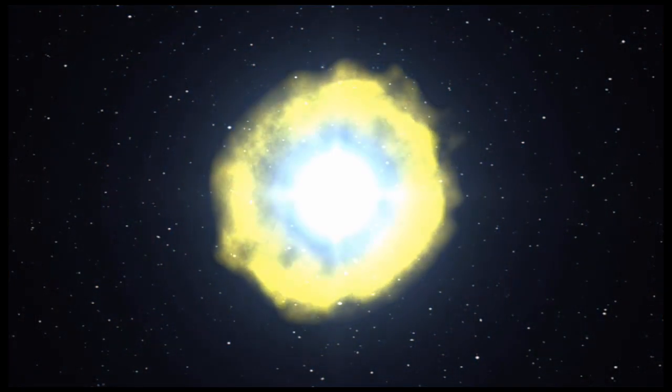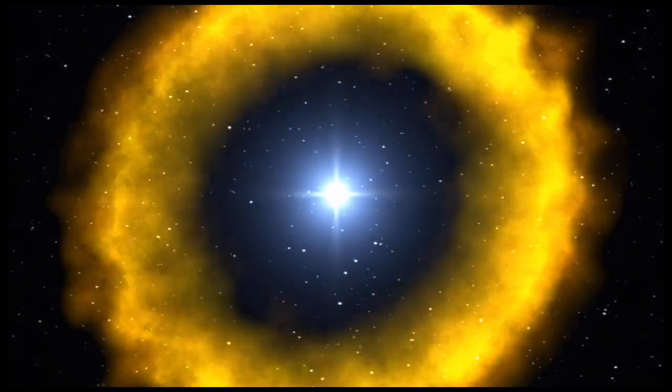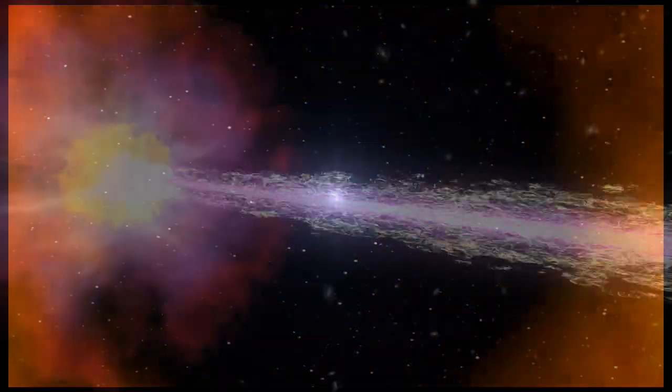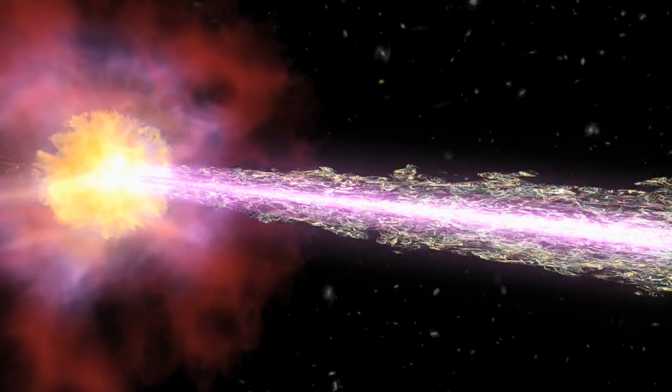We observed a gamma ray burst. A gamma ray burst is a huge explosion. That gamma ray burst produced a large number of photons, one of which had enormous energy, very short wavelengths. Those photons travelled 7 billion years to reach us, and yet the highest energy, the shortest wavelength photon, arrived within 900 milliseconds of the lower energy photons.